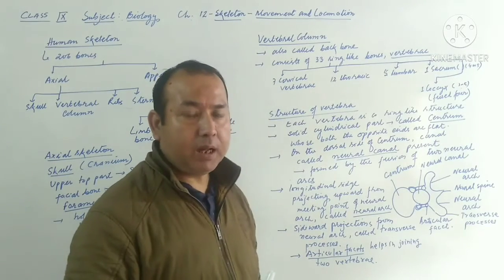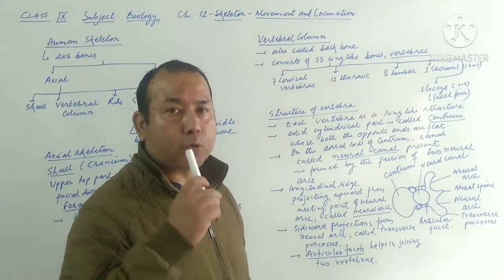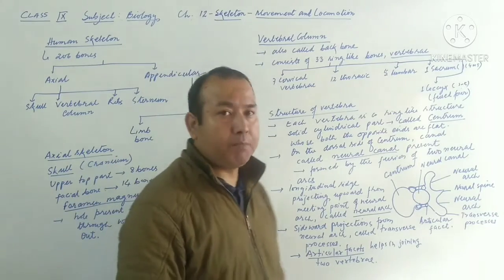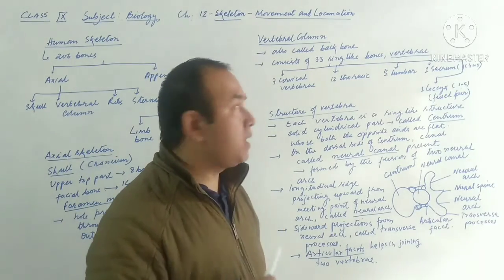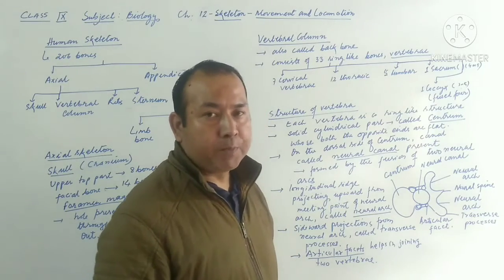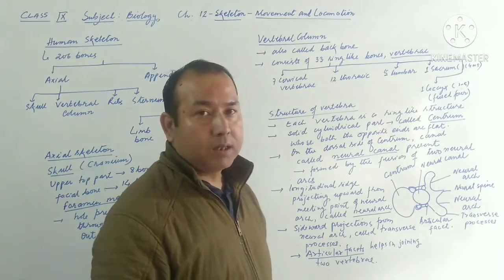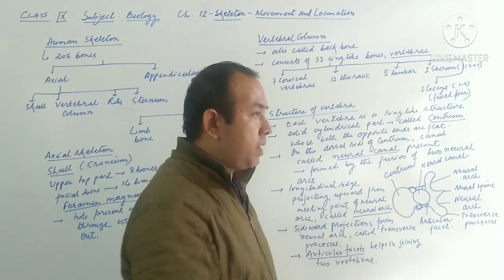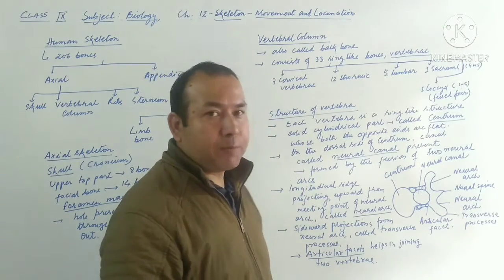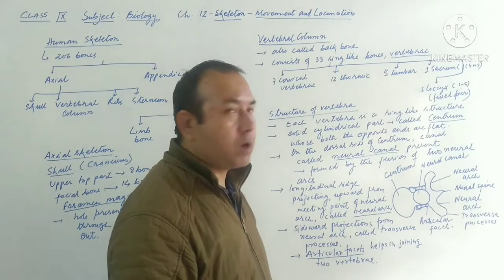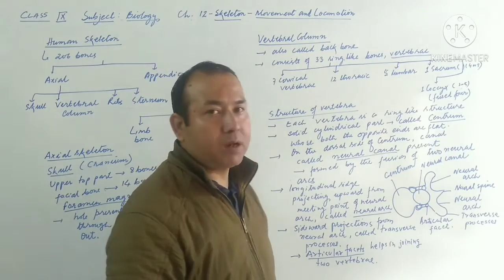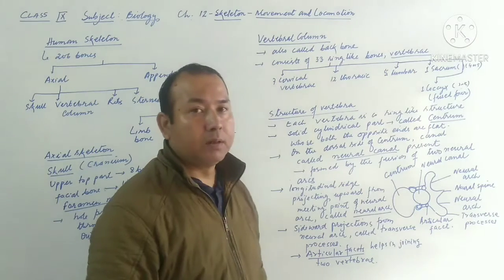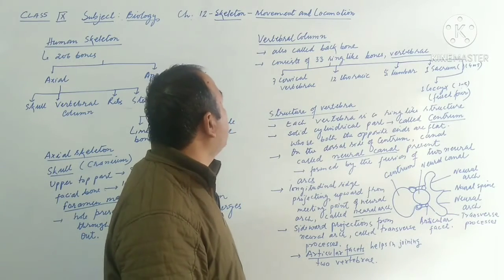After that come the thoracic vertebrae, present in the thorax — that is, the chest region — with around 12 thoracic vertebrae. Then comes the lumbar region, mostly in the abdomen, with around five lumbar vertebrae. After that is the sacrum, formed by the fusion of four to five vertebrae. The last part, at the tail end, is the coccyx, formed by the fusion of three to five vertebrae.